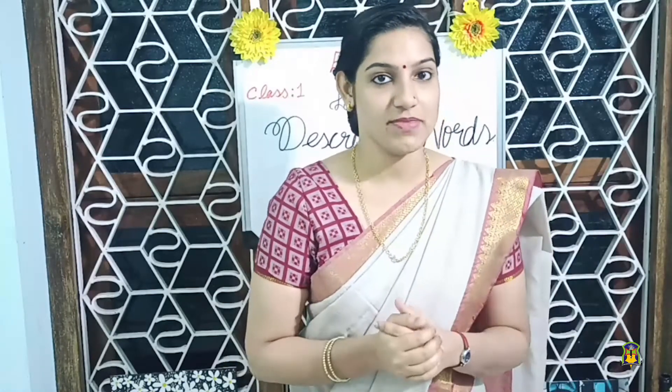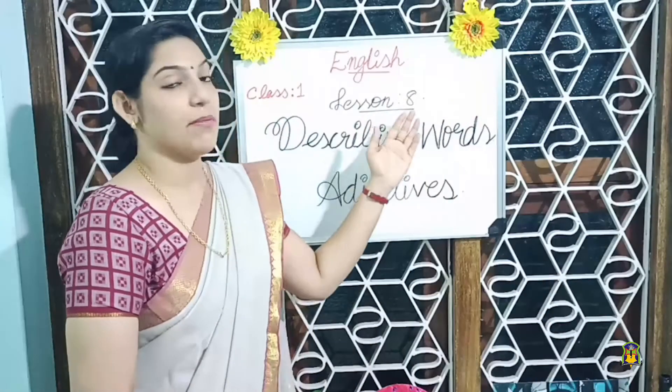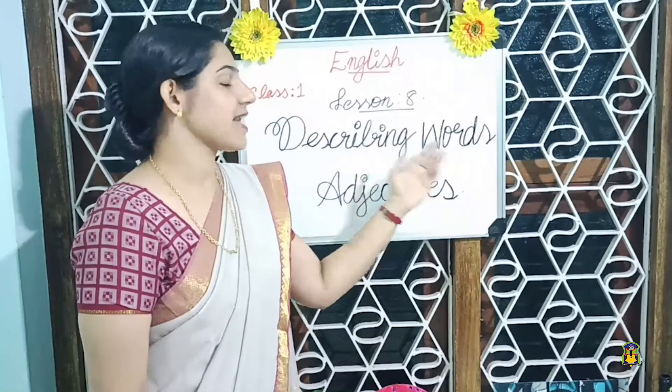Children, just look around yourself. Can you see anything? You can see so many things of many colors, many shapes and many sizes. There are some words which tell us more about a person, place or thing. They are describing words. Such kind of words are called describing words. Lesson number eight: Describing words.